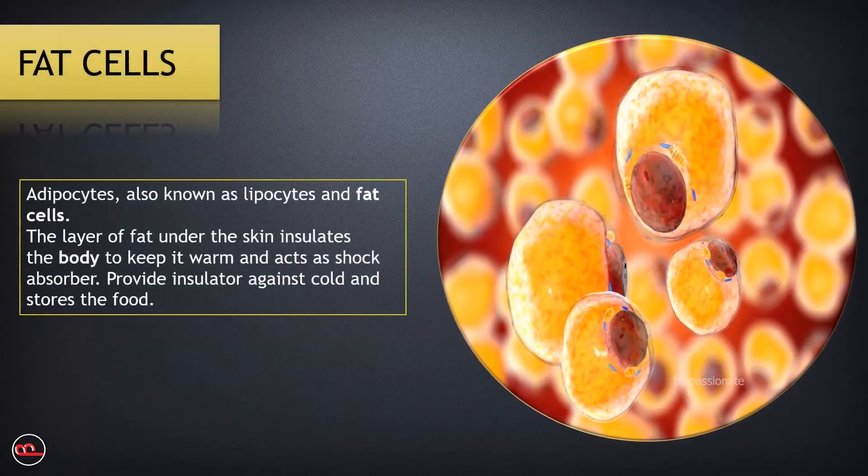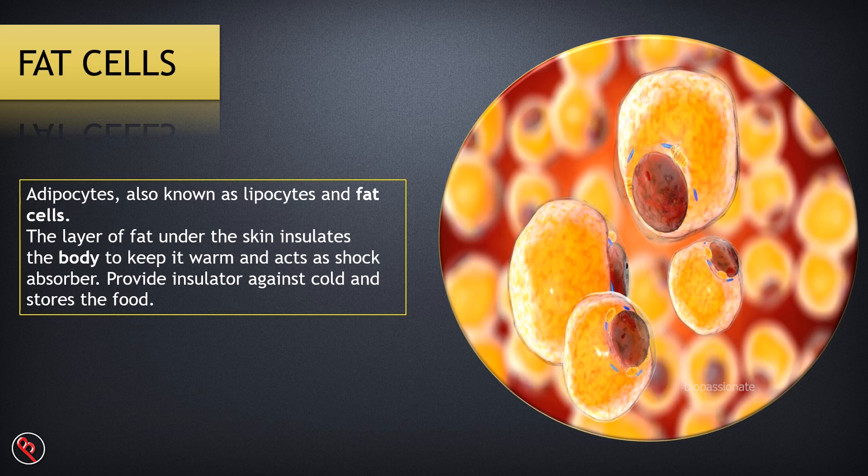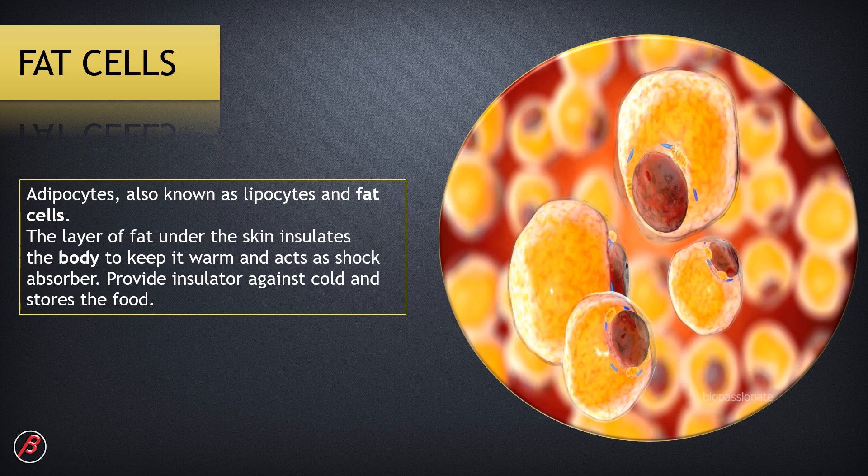Fat cells are also known as adipocytes and lipocytes. The layer of fat under the skin insulates the body to keep it warm and acts as a shock absorber. Fat cells and adipose tissue provide insulation against the cold and store food.